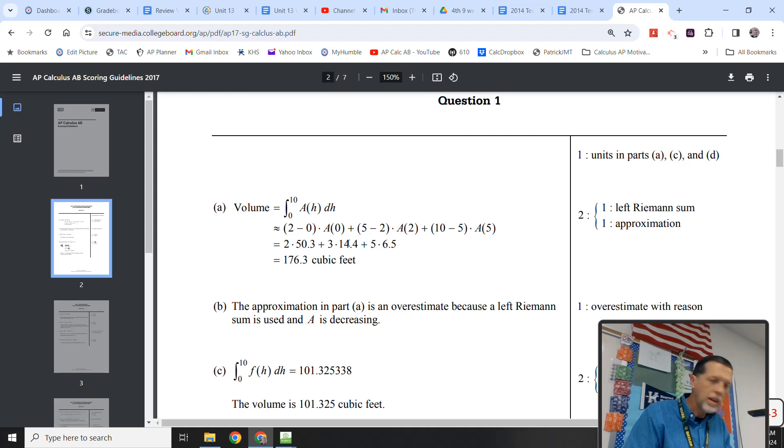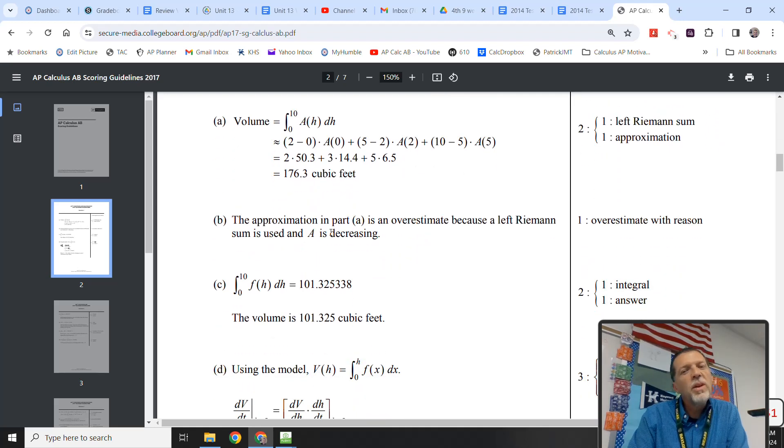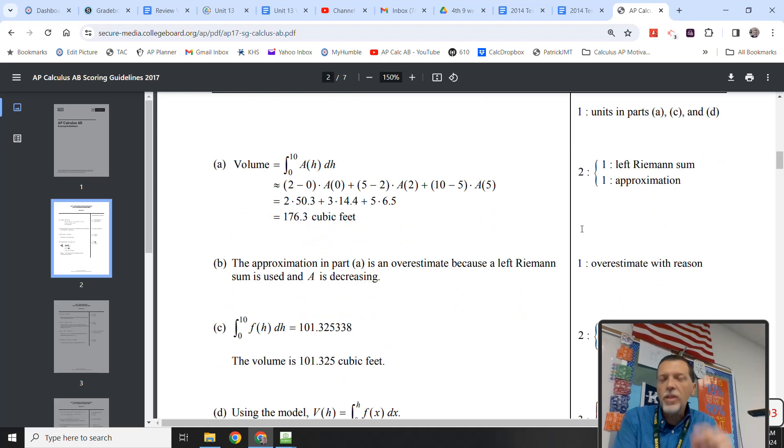Part B was fairly easy. It was an overestimate, a left Riemann sum, and A is decreasing. So that was only worth a point. Okay, so I'm going to argue that there's four points to be had here that were pretty easy points. The Riemann sum, the overestimate, and the units, all that together gets four points. Four out of nine is 44. That's like the minimum score for a three. So hopefully you knock out those two and you're on track for a three. Maybe we can figure out a little bit more.